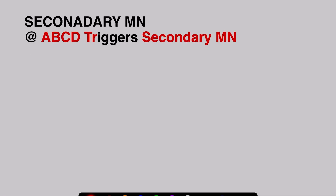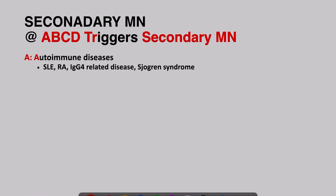Now let's move to secondary membranous nephropathy. The mnemonic to remember the causes of secondary membranous nephropathy is ABCD triggers secondary membranous nephropathy. A is for autoimmune diseases like SLE, RA, IgG4-related disease, and Sjögren's syndrome.